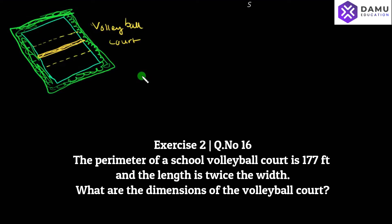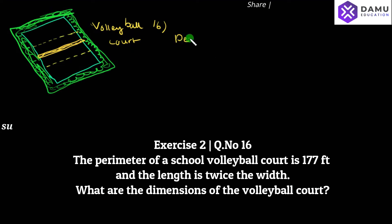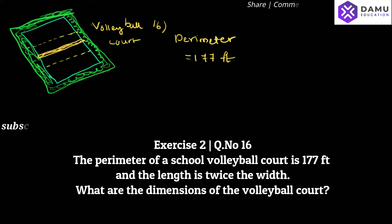Hello viewers, thanks for watching our videos. If not subscribed, please subscribe. In this module we're going to discuss the answer for the 16th question. What they have given is: the perimeter of a school volleyball court is 177 feet, and the length is twice the width.